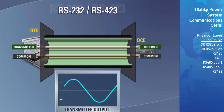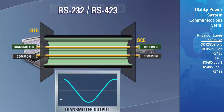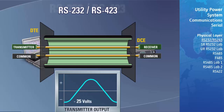It will take some time for the transmitter's output to swing from plus 25 volts to minus 25 volts. This delay is called the slew rate and is one of the factors that limit the maximum transmission rate.